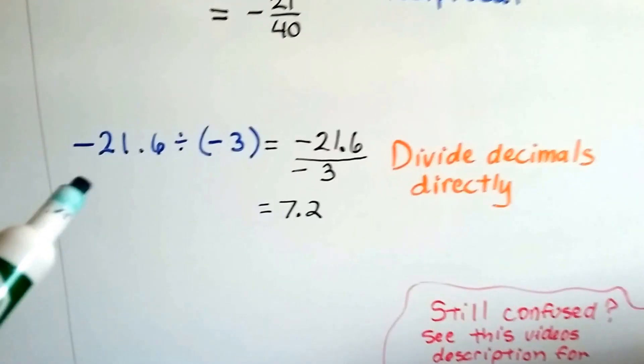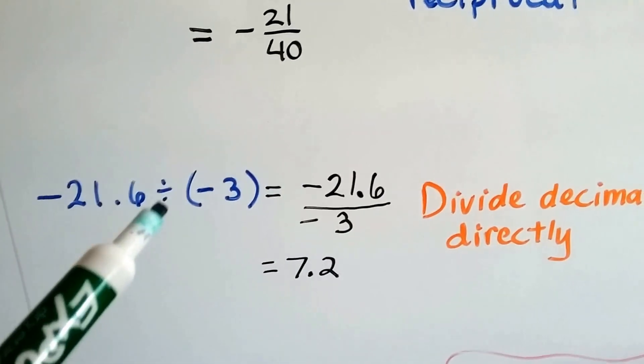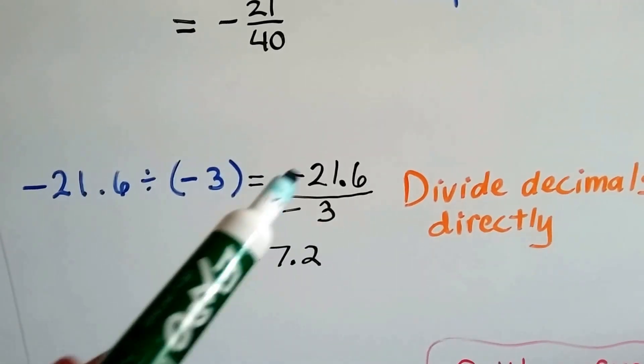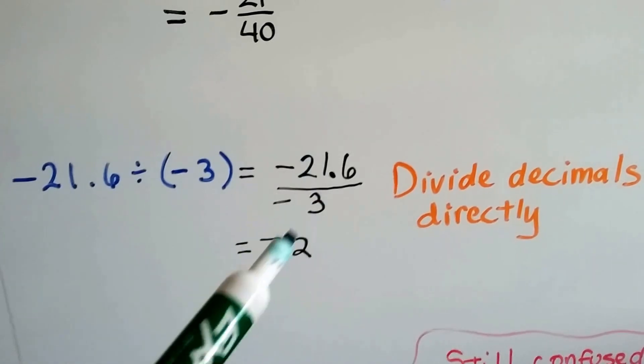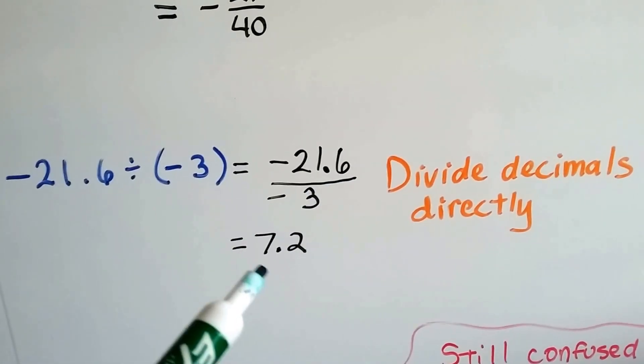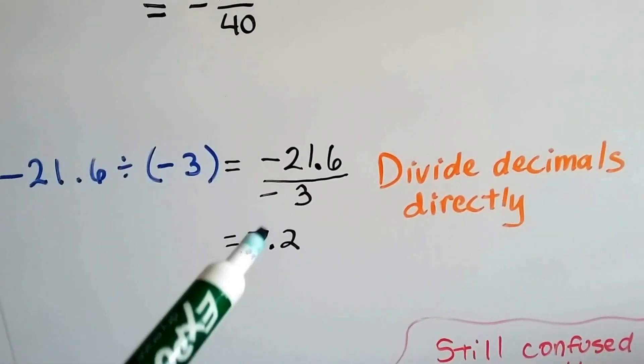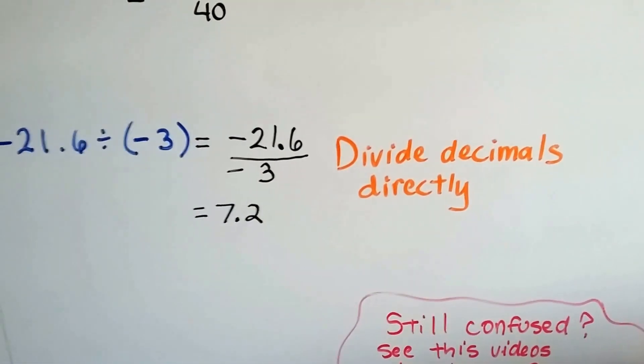But when we have decimals like negative 21.6 divided by negative 3, we can write it as a fraction like this, like a little division problem. 3 goes into 21 seven times. 3 goes into 6 two times. We put our decimal point. We've got 7.2. And because these are both negative, we get a positive. We divide decimals directly.